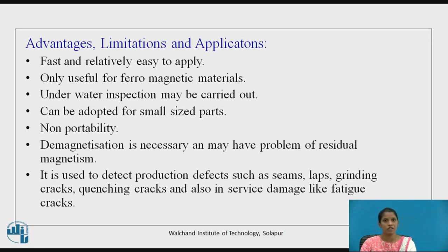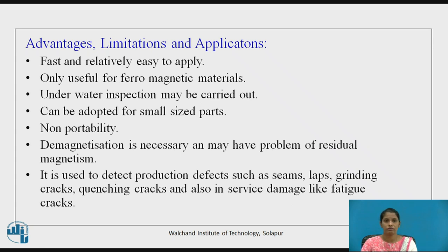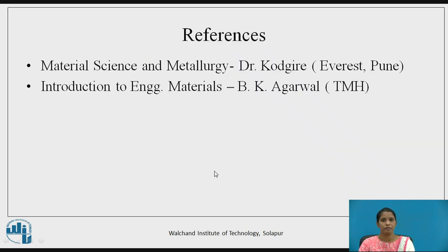Advantages, limitations, and applications: magnetic particle testing is fast and relatively easy to apply. It is used only for ferromagnetic materials; underwater inspection can also be carried out, but demagnetization is necessary afterward. It is used to detect production defects such as seams, laps, grinding cracks, and so on. References: Material Science and Metallurgy by Dr. Kodgire and Introduction to Engineering Materials by B.K. Agarwal. Thank you.